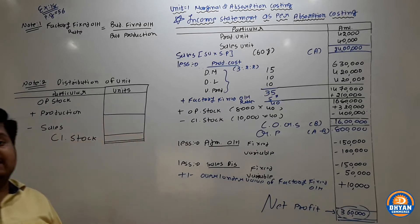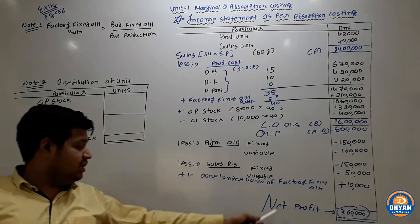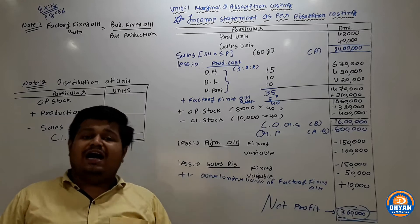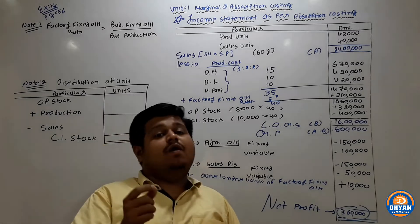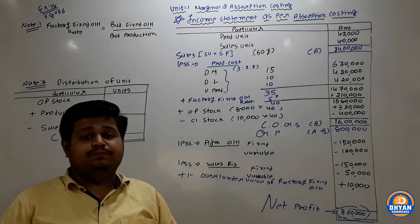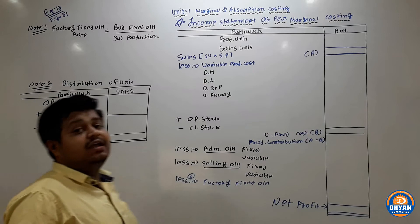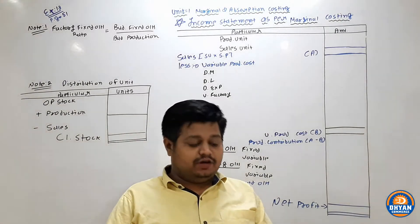The marginal and absorption costing statements are now complete. If you can make a reconciliation statement, you can do that as well. Today we will look at Example Number 13, page number 51 in your textbook.